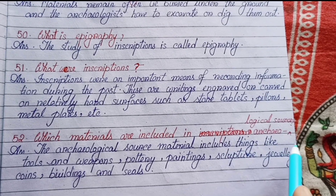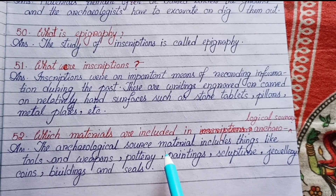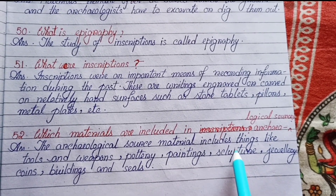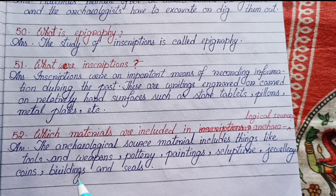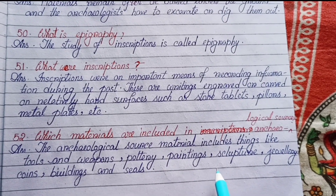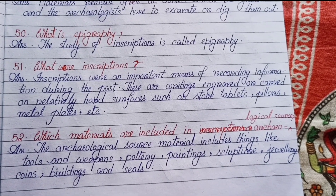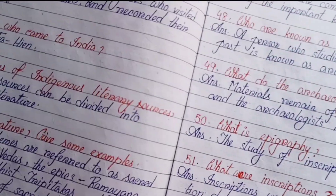Number fifty-two: Which materials are included in archaeological sources? The archaeological source material includes things like tools and weapons, pottery, paintings, sculpture, jewelry, coins, buildings and seals.